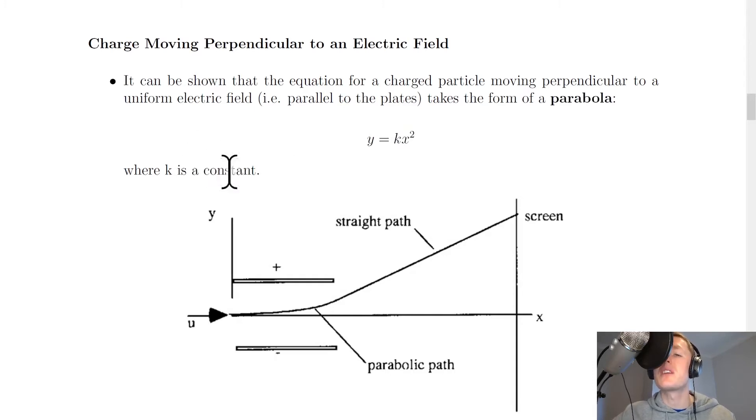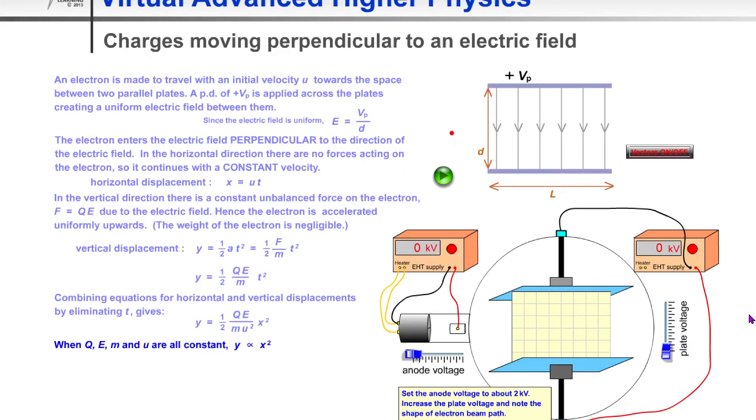I'm going to show you a simulation to help you understand this. If you have a look at this setup for a cathode ray tube, you can see we've got two EHT supplies and a grid screen between the two plates. You've also got an anode and a cathode letting this cathode ray tube work.